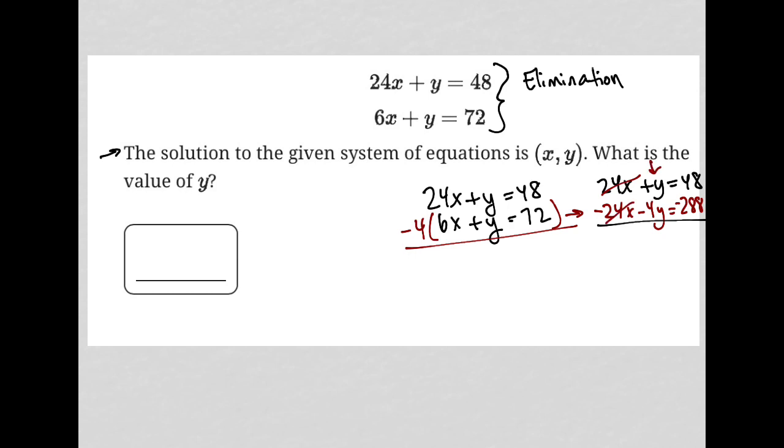Y minus 4y is negative 3y. And 48 minus 288 is negative 240. So I can just divide by negative 3. And what I'm left with is that y is equal to positive 80. And therefore, our answer here is 80.